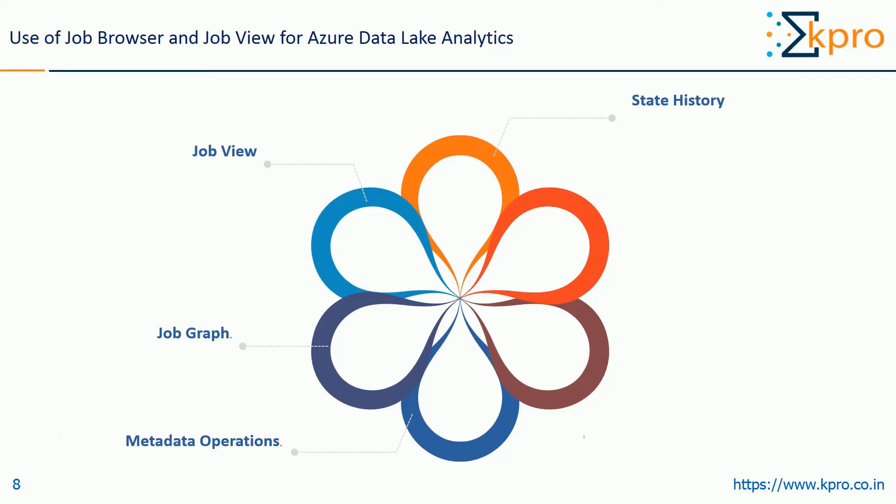Next, State History — the state history is also visualized in the job summary, but you can get more details here. You can find detailed information such as when the job started, when the job was prepared, the queue status, running status, and also how many times the job has been completed.